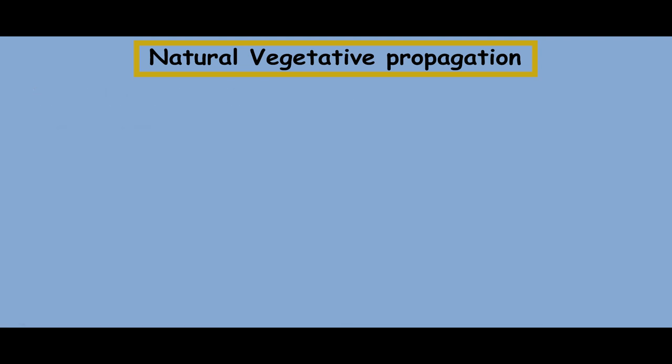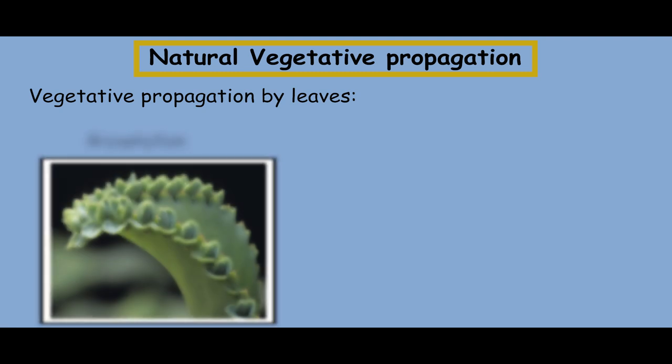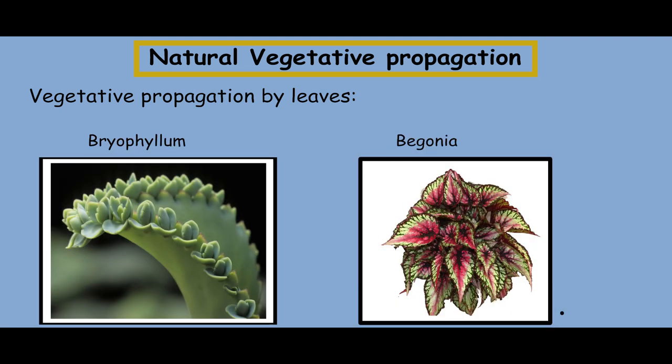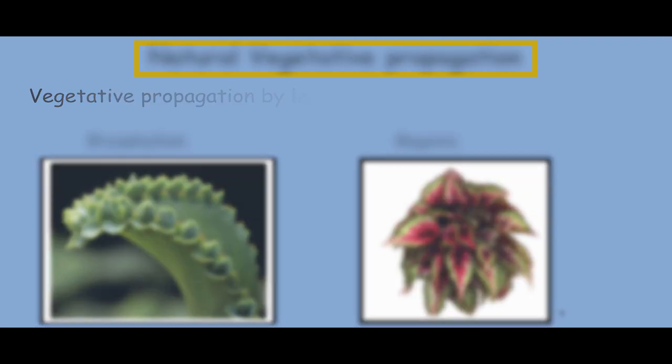Finally, we have vegetative propagation by leaves. In plants like bryophyllum and begonia, buds are produced on the leaf margins. These buds, falling on the ground, grow into new plants.